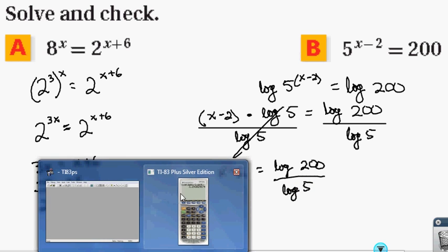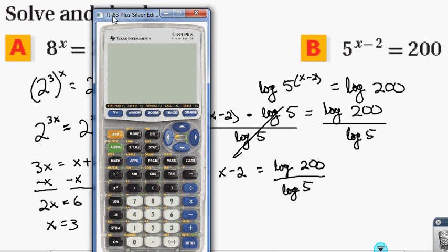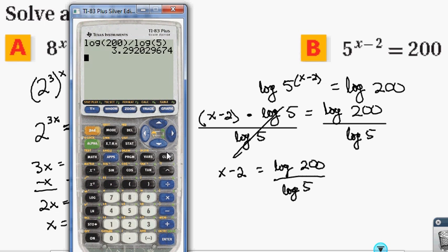At this point, we'll take our calculator, turn it on, and we'll do the division, log 200 divided by log 5.